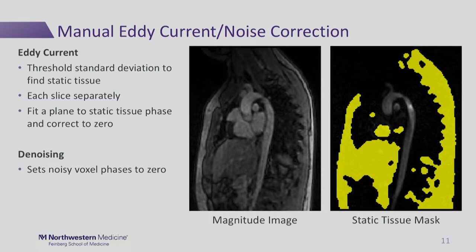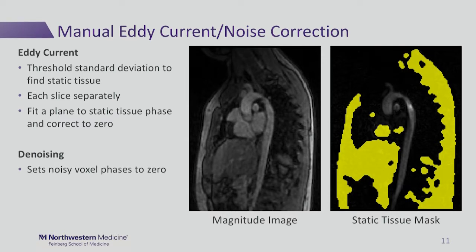The first correction is eddy current correction. For this, we find a static tissue mask by looking at the standard deviation of the velocity. Areas with low standard deviation are thresholded, and those are static tissue. We do a manual correction looking at each slice separately. After this, we fit a plane to our static tissue mask phase and use this to correct the background phase.